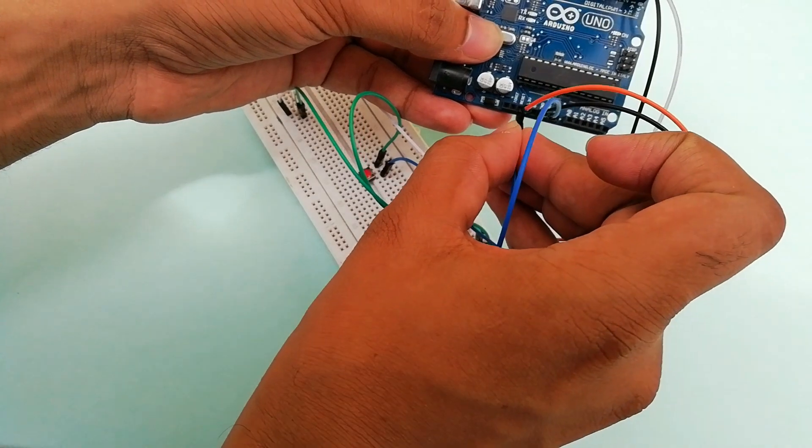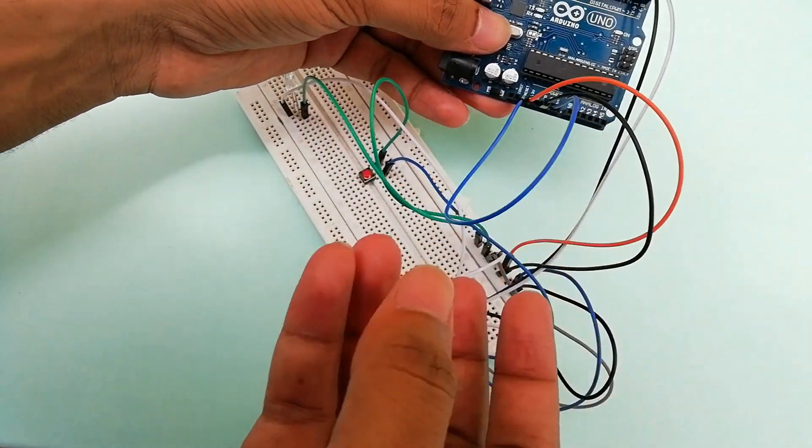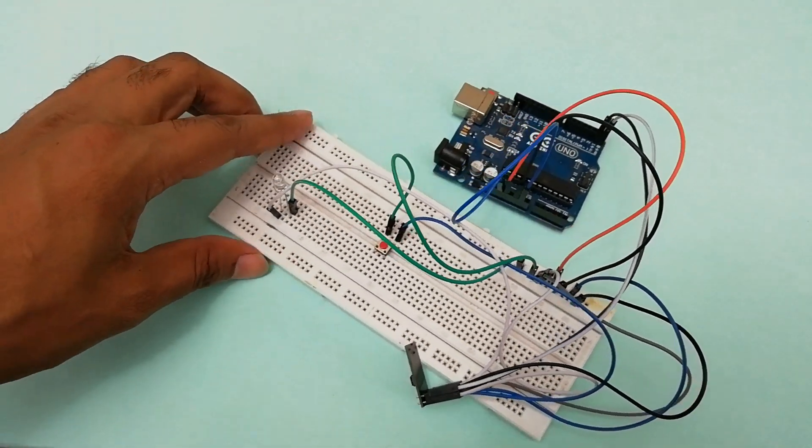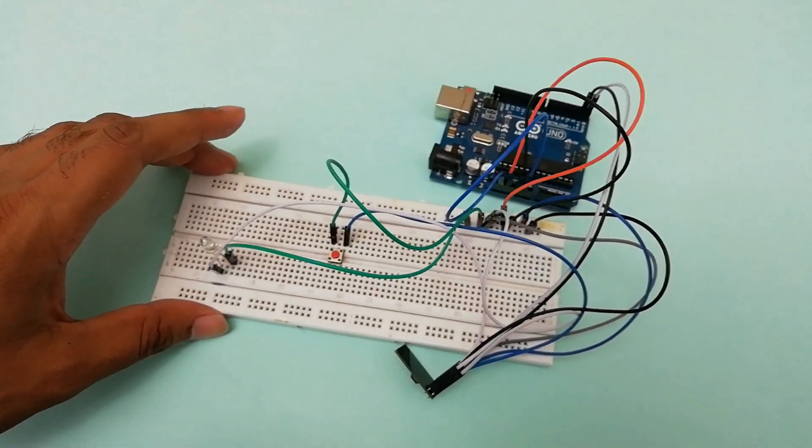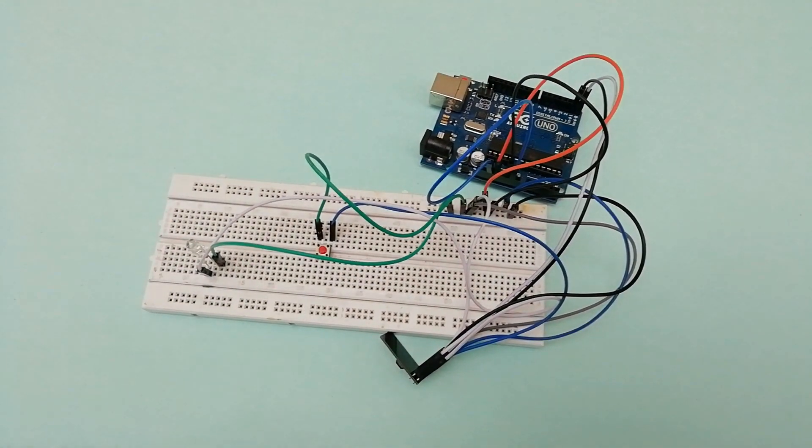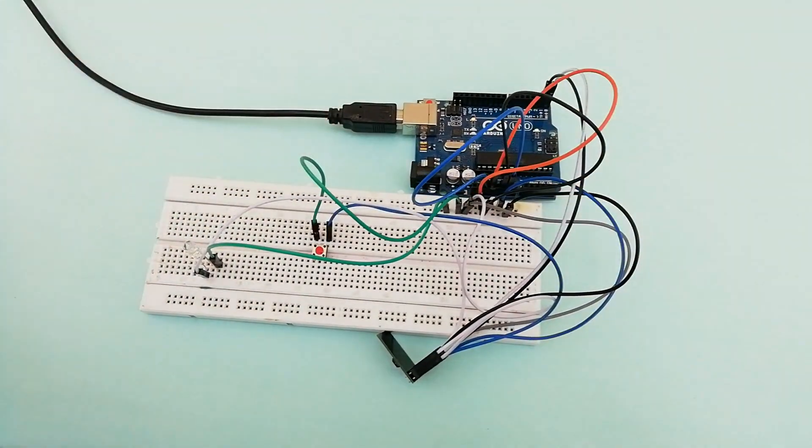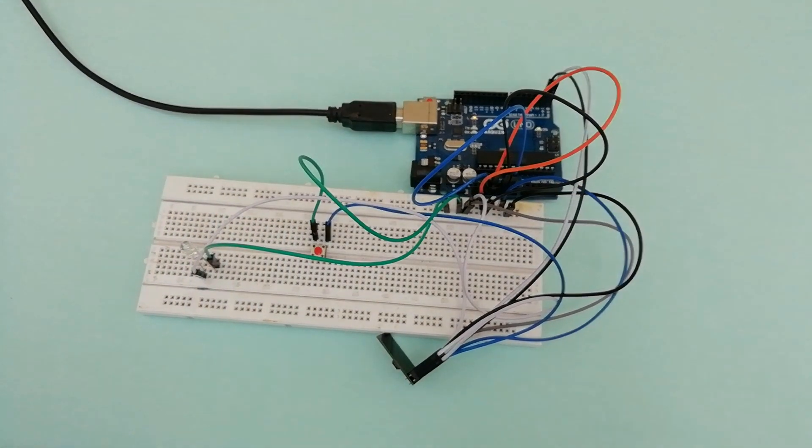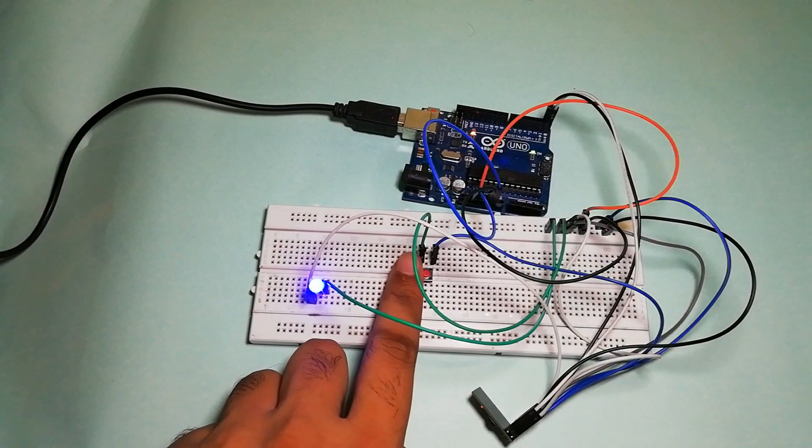After connecting and configuring the ESP8266 in programming mode, that is GPIO 0 pin is connected to ground, connect the Arduino to the system. Once the ESP8266 module is powered on, push the RST button, that is the reset button, and open the Arduino IDE.